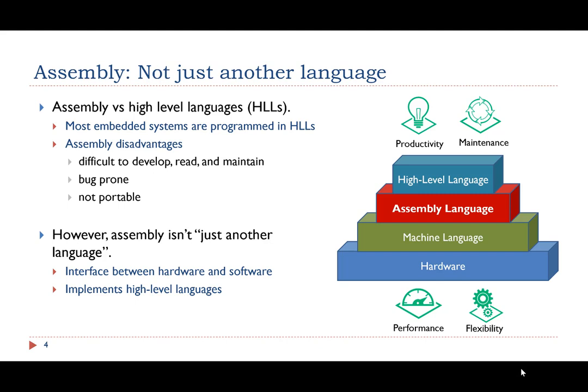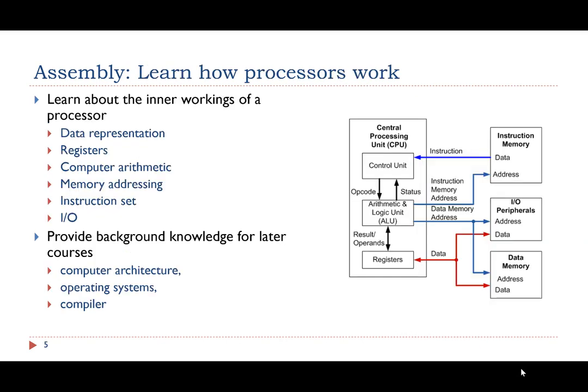Simultaneously, via implementing high-level control structures, assembly language helps us understand high-level language better. Therefore, the first reason for learning assembly is that it helps us learn how a processor works. Assembly language describes what is going on under the hood of the processor. It provides required background knowledge for courses you might take later, such as computer architecture, operating systems, and compilers.